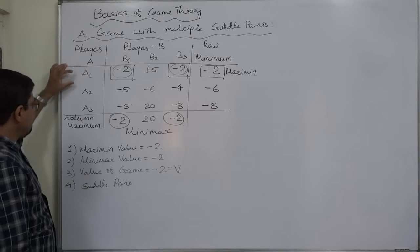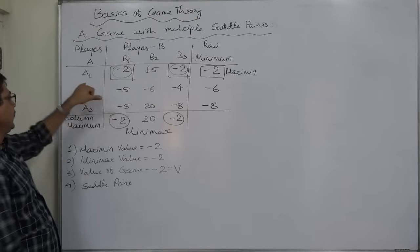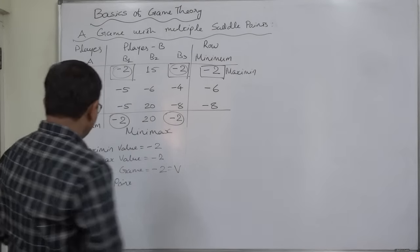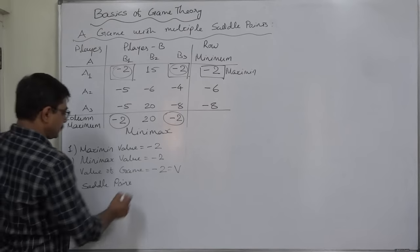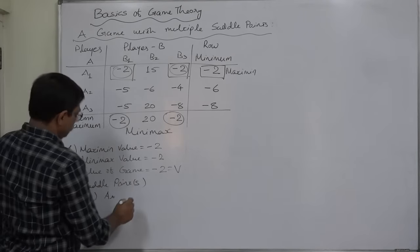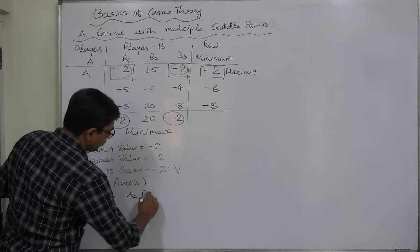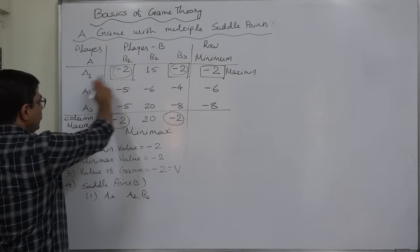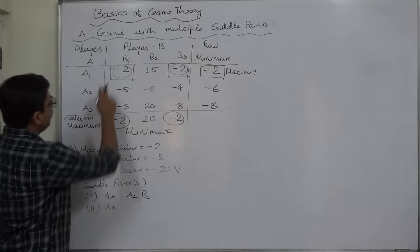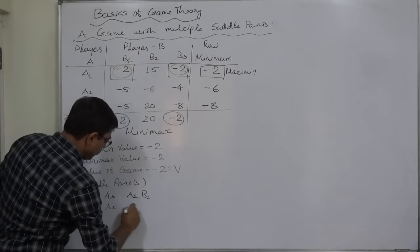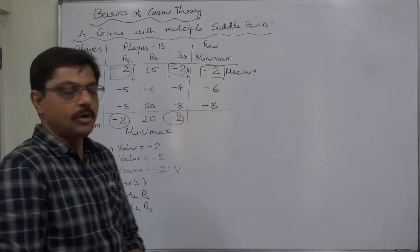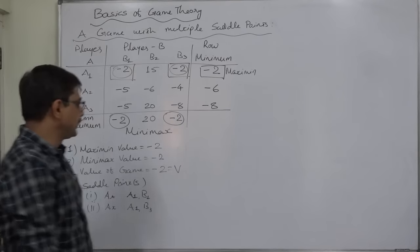The value minus 2 can be seen in two different places. For player A, both occur in strategy A1, but for player B they are in B1 and B3 respectively. So the saddle points are at A1-B1 and A1-B3. This is the case of a game with multiple saddle points.